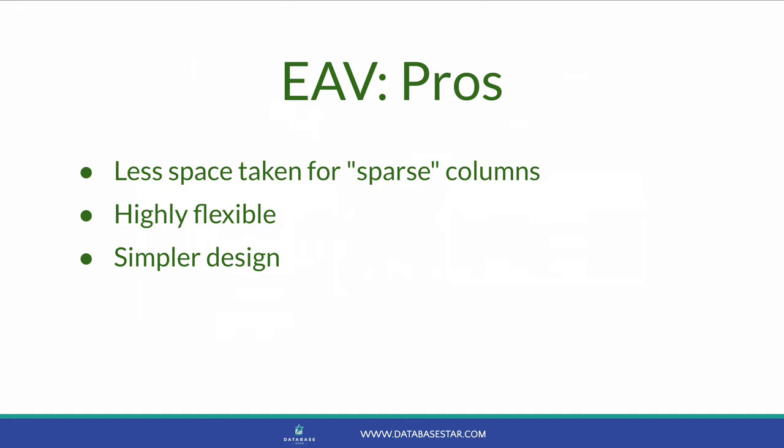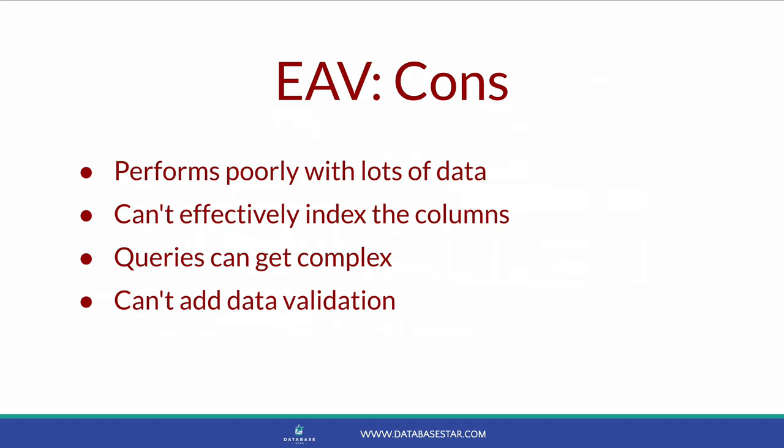A final advantage is a simpler design — well, it may seem simpler as there is only one extra table and a couple of columns. However, while it may look simpler on an ERD, it has many other issues. One disadvantage is that it performs poorly when it has more data. You need to write queries that access the table in a specific way, and when there is a lot of data it can really slow down the query. Another disadvantage is that you can't effectively index the columns. Indexes work best when the data type follows a certain pattern, but indexing the attribute or value column won't be effective because it contains all kinds of data.